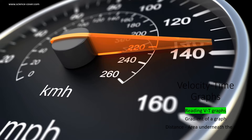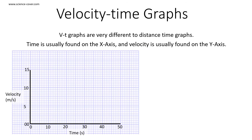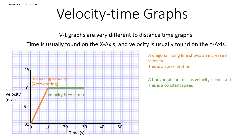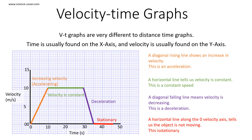Let's learn how to read a velocity time graph. Velocity time graphs are very different from distance time graphs. Time is still found on the x-axis; however, velocity is now on the y-axis. This means that a change in height represents a change in velocity. A diagonal rising line shows an increase in velocity, so this is an acceleration. A horizontal line tells us that velocity is constant, so this is constant speed. A diagonal falling line means that velocity is decreasing, so this is a deceleration. And a horizontal line along the zero velocity axis tells us that the object is not moving, so it's stationary.